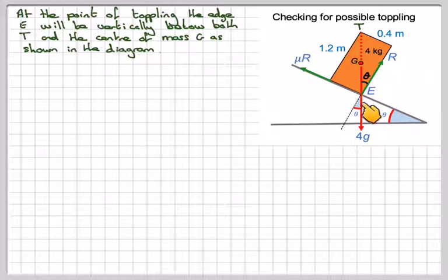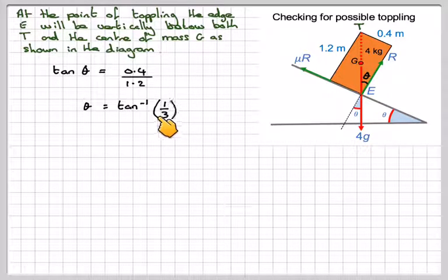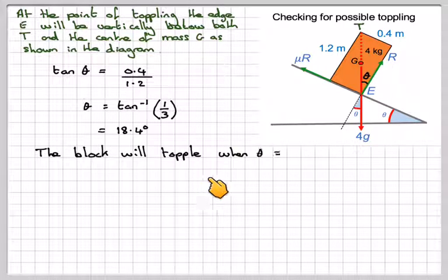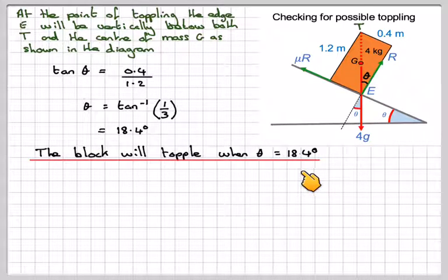So if we consider this triangle here, this is 0.4, this is 1.2, then we can say that tan theta is opposite 0.4 divided by 1.2. So theta will be tan to the minus of 0.4 over 1.2, which is 1 third, which gives me 18.4 degrees. So the block will topple when theta is equal to 18.4 degrees.